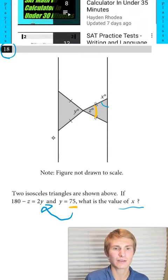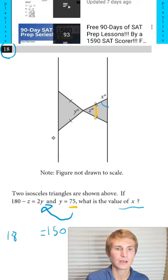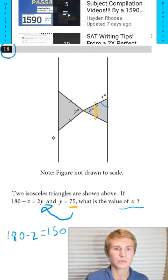So I plug in 75, multiply it by 2. That's going to give me 150 is equal to 180 minus z. That means that z is going to have to be equal to 30.